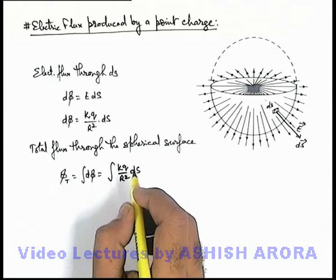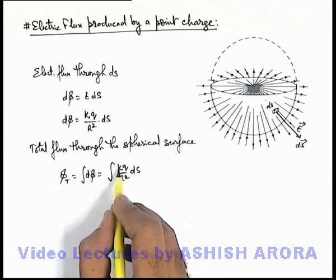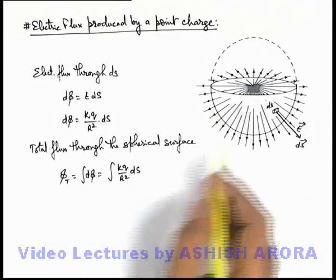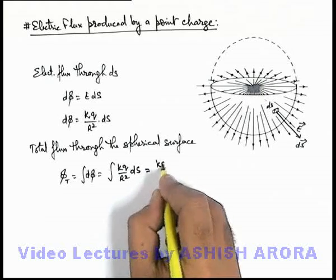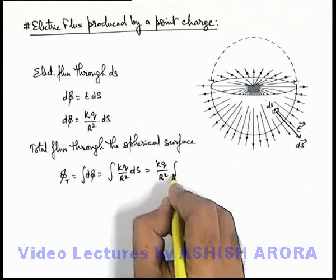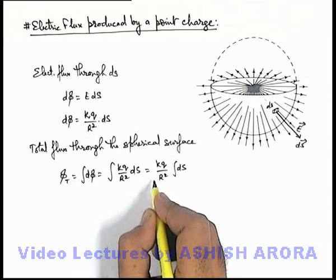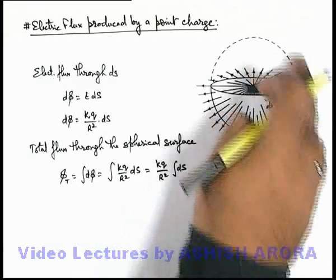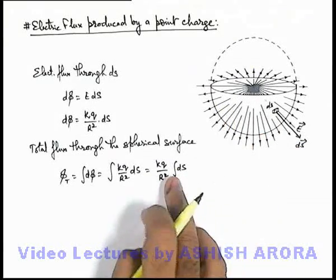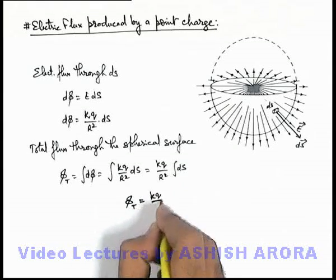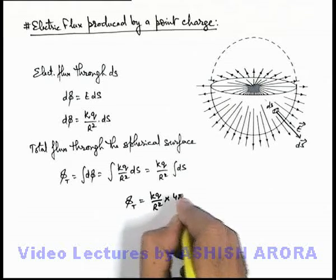In this situation, we can see that k, q, and r - all these three parameters are constant for the whole spherical surface. It'll be kq/r² times integration of dS. We can take these constants out of the integration sign. For the whole spherical region, integration of dS is simply 4πr², which is the area of this surface.